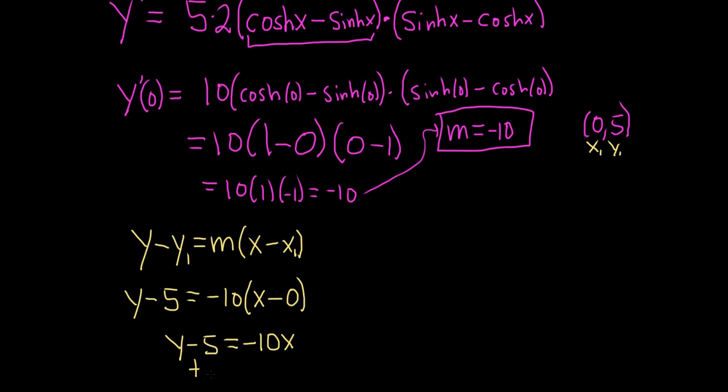The last thing is to add 5 to both sides. And so we end up with y equals negative 10x plus 5. And that is the equation of the tangent line.